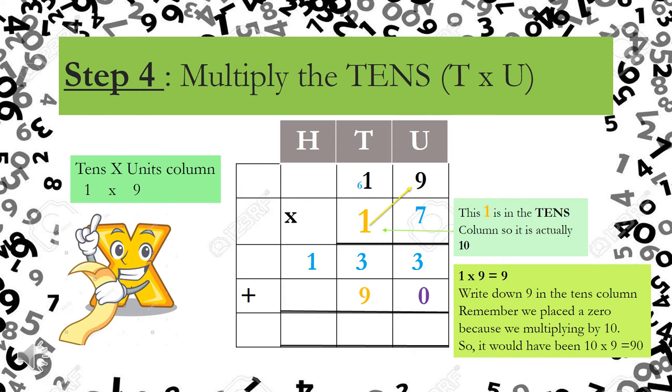Now that I've placed my zero down, because I'm multiplying by 10, I can get to the numbers and multiply now. If you look at the yellow arrow, it's showing me that I must multiply my 10 by my units. Remember, cross multiplication. I always start multiplying my units, then multiply my tens. So here I see 1 times 9. Remember that that 1 is actually 10. It's in the tens column. But because I place my zero down, I can say 1 times 9. And 1 times 9 boys and girls equals 9.